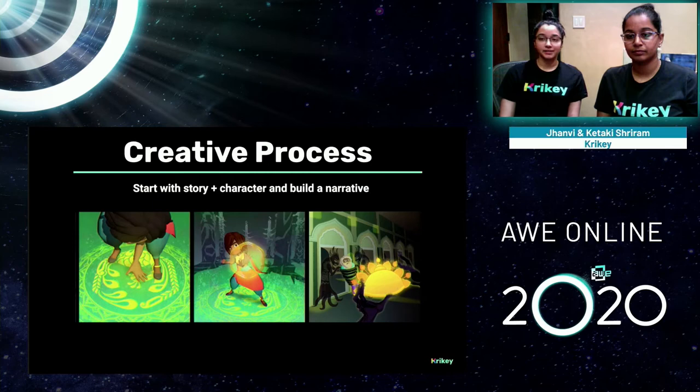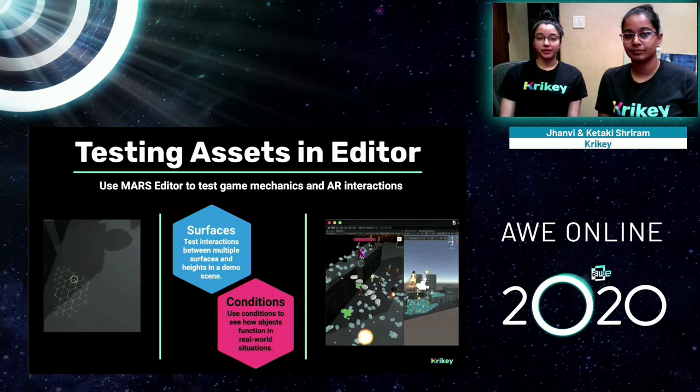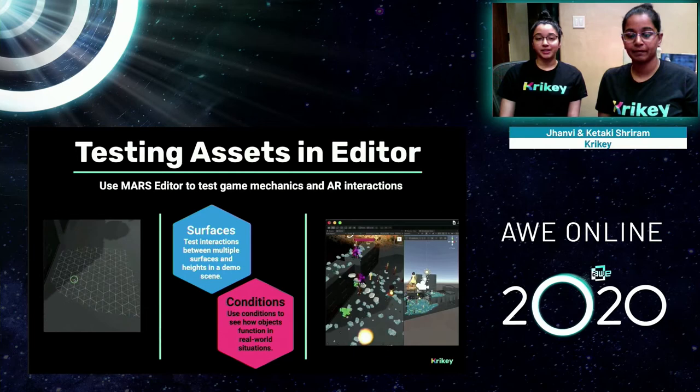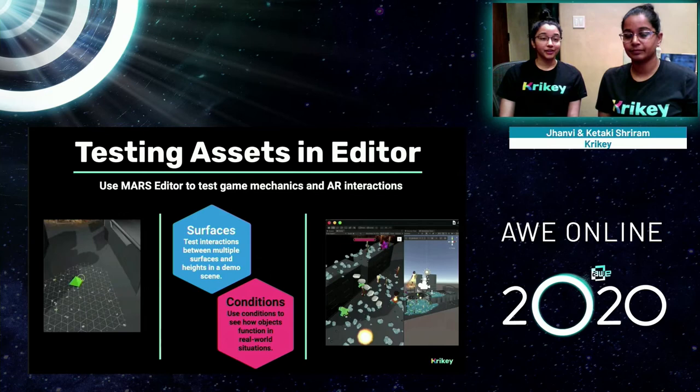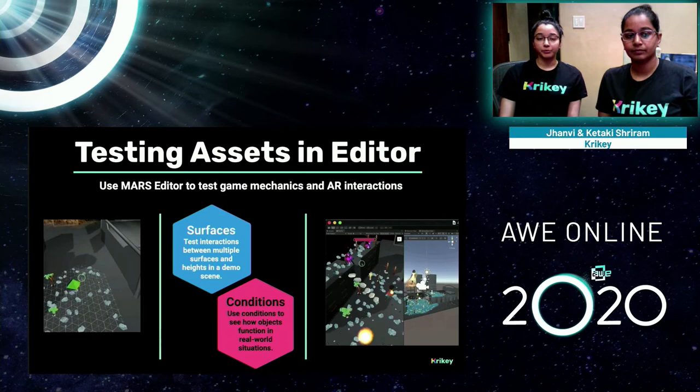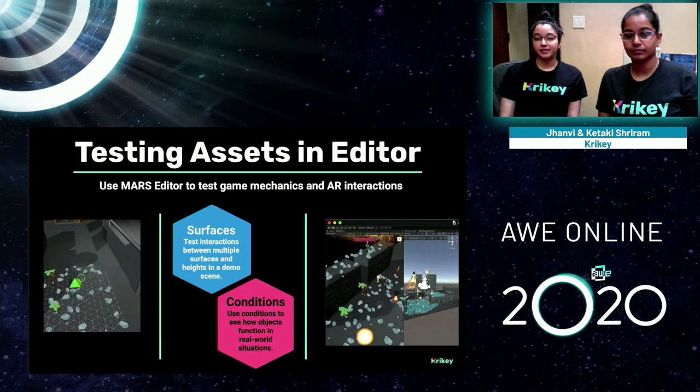Next up, testing our assets. Once we've built our story narrative and all of our 3D assets, we test them inside of MARS. As mentioned, MARS allows us to test AR experiences directly in the editor in two ways. The first is with surfaces — in the GIF at left, you can see us inside the simulation view in MARS, which is a sample bedroom. We can see what will happen when we detect multiple surfaces in this room and try to spawn objects upon it, enabling us to test the game at a very simple level without ever making a build.